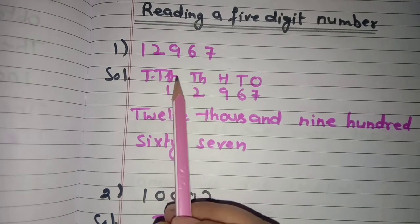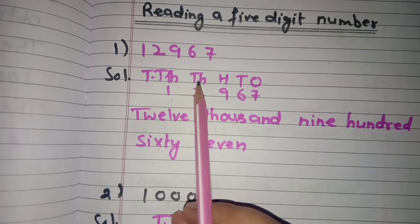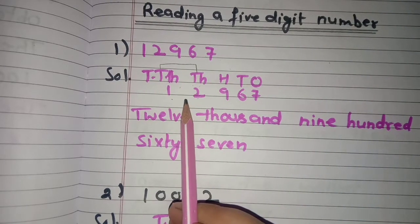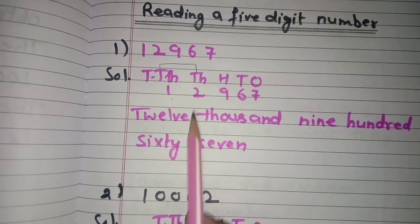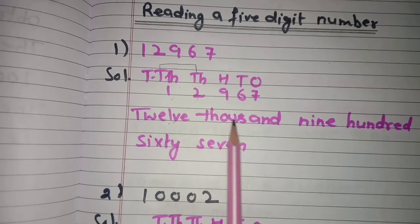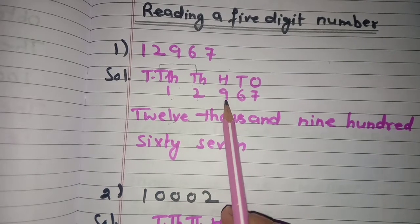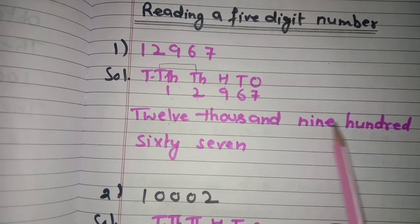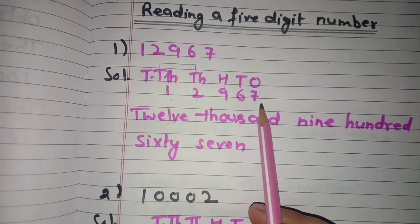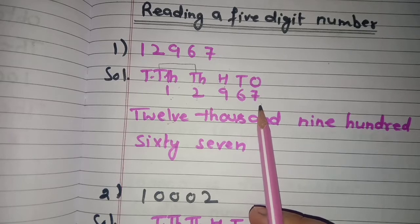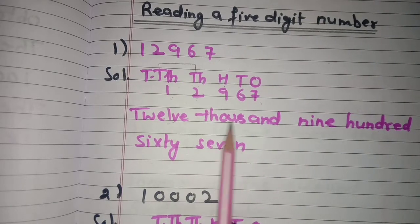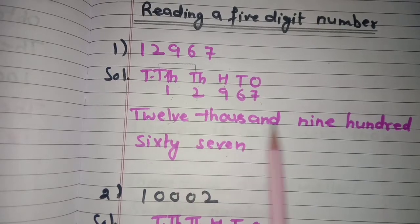The digits 1 and 2 are under the ten thousands and thousands places, which both come under the thousands period, so we read it as twelve thousand. Then 9 is at hundreds place, so we write nine hundred. The digits at tens and ones places are read together: sixty seven. So the number is twelve thousand nine hundred sixty seven.